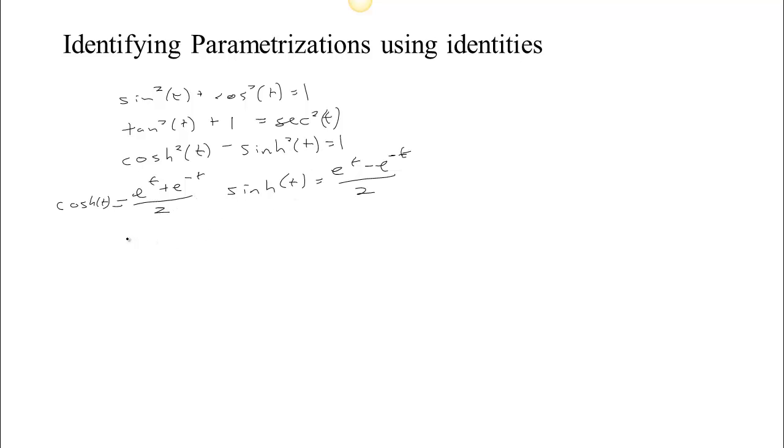Also, sometimes you see identities that come from double angle things. So some of the problems might have a cosine 2t. Remember, cosine 2t is the same thing as cosine squared t minus sine squared t, which is also the same thing as 2 cosine squared t minus 1, which is also the same thing as 1 minus 2 sine squared t. So these are identities that might come up in doing this.